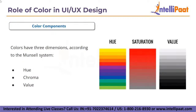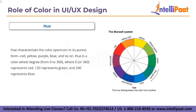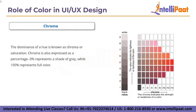According to the Munsell system, the components of color are hue, chroma, and value. Hue characterizes the color spectrum in its purest form — such as red, yellow, purple, blue. Hue is measured as a degree on the color wheel from 0 to 360, where 0 or 360 represents red, 120 represents green, and 240 represents blue.